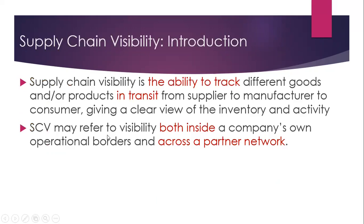Now let us see what Supply Chain Visibility is. Supply Chain Visibility is the ability to track different goods in transit from supplier to manufacturer to consumer, giving a clear view of inventory and activity. Supply Chain Visibility may refer to visibility both inside and across a partner network.